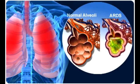What is Acute Respiratory Distress Syndrome? Acute Respiratory Distress Syndrome is a life-threatening lung condition that prevents enough oxygen from getting to the lungs and into the bloodstream.